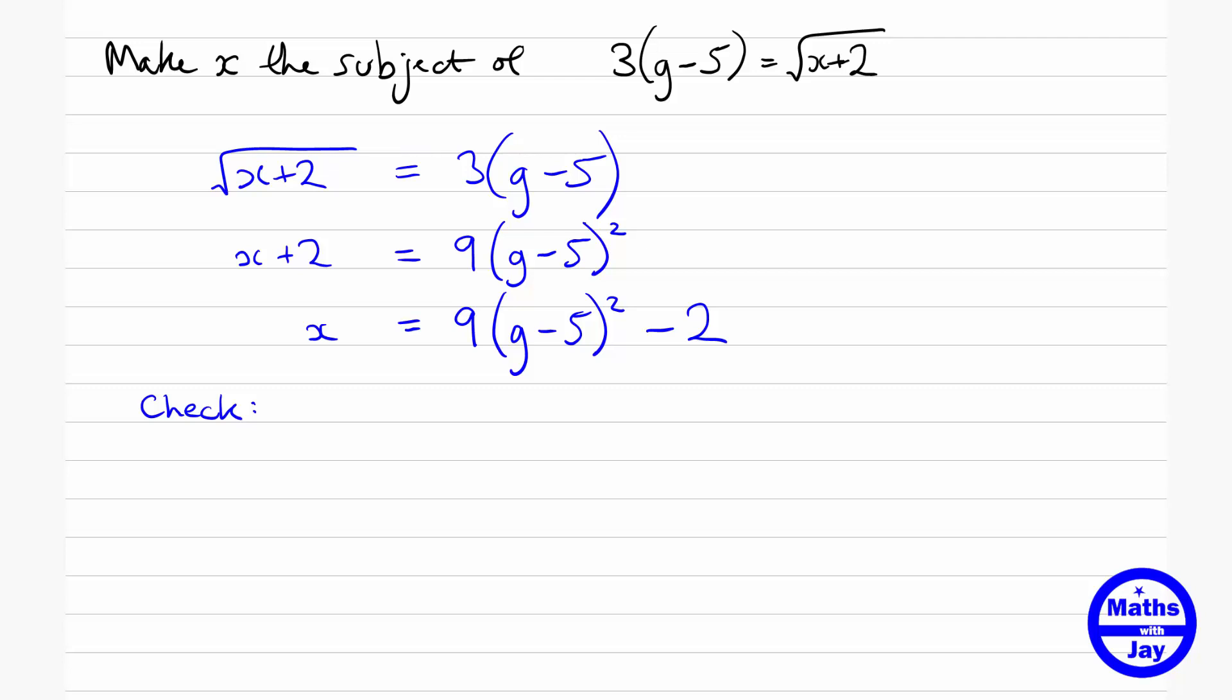Now because of this square root, it's going to be a lot easier if we choose the value of x so that will make that square root a nice whole number. So I'm going to choose x equal to 7. So that gives me, just looking at the first line where we've got the question, we've got 3g minus 5 is the square root of x plus 2. So that's the square root of 7 plus 2, which is the square root of 9, which is 3.